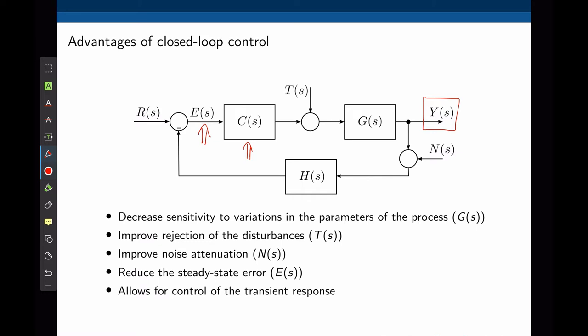Because the controller takes actions based on the error, it will compensate for changes in the output due to the disturbance. Another advantage of closed-loop control is reduced sensitivity to variations in process parameters. Open-loop control requires precise knowledge of the process, whereas in closed-loop control, if the process changes during operation, that will also create an error that the controller will account for. Other advantages include noise attenuation and control over steady-state and transient responses, including the steady-state error.